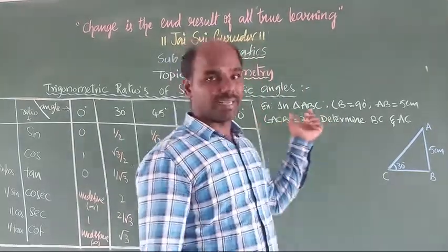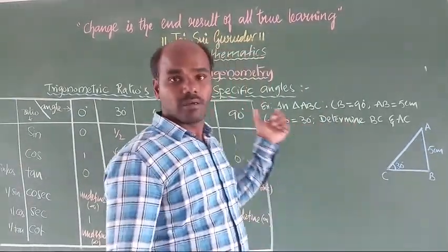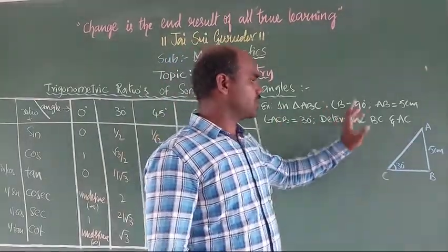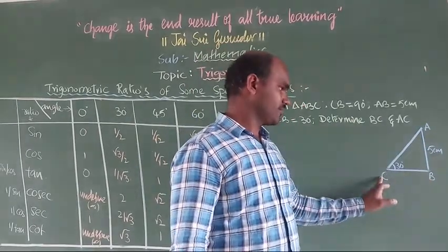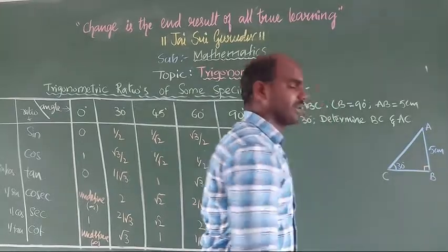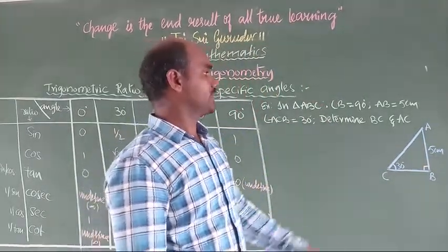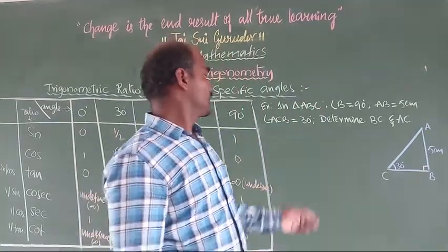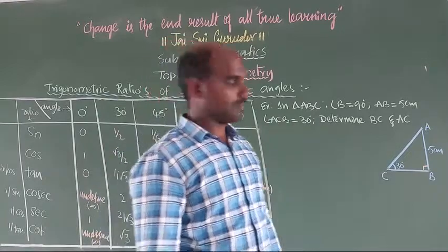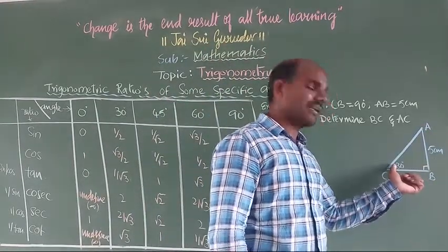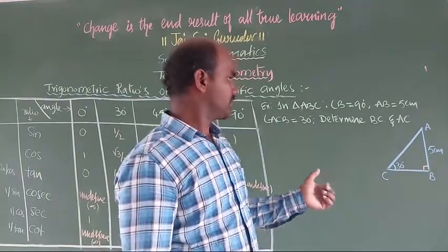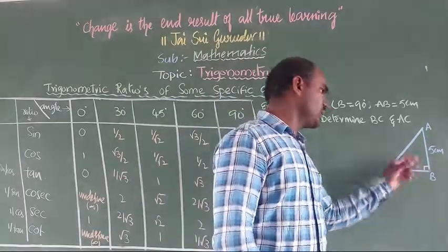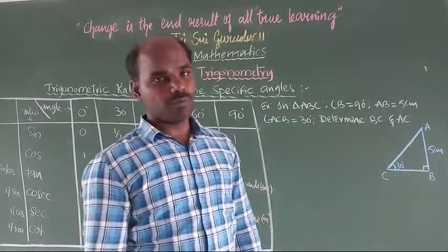Here is one example based on specific angles. We are given that in triangle ABC, angle B is equal to 90 degrees. AB is equal to 5 cm, and angle ACB is equal to 30 degrees. We have to determine the values of BC and AC — we need to find both.